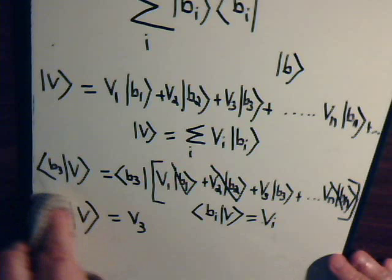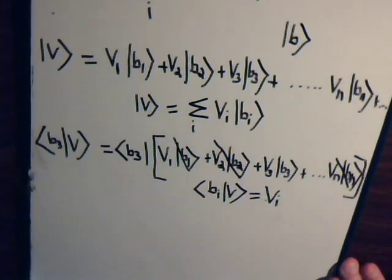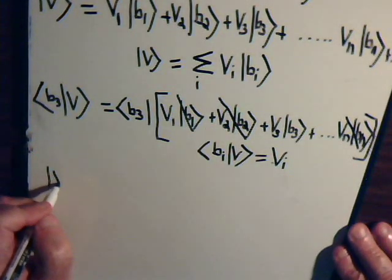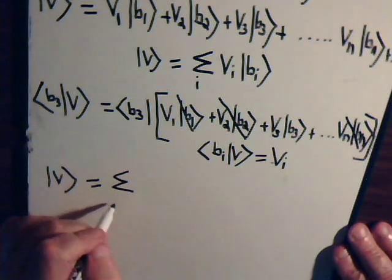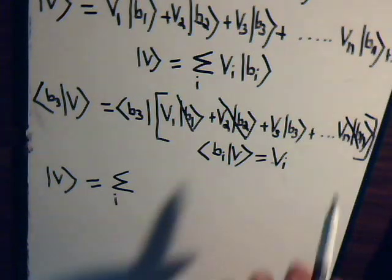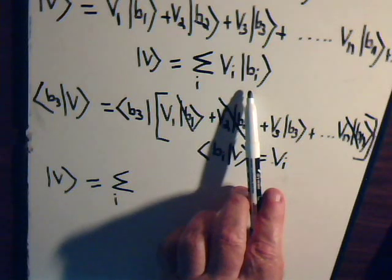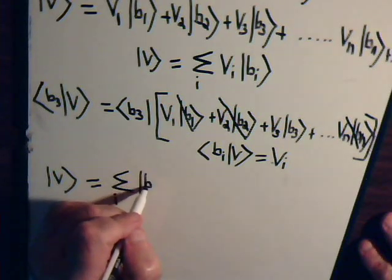Okay, hopefully that makes sense. Then now let's go back. What we have here is this expression. So let's make some room and write this down here. We're saying that v equals the sum over i, and here this is a coefficient, probably a complex number, multiplied by this basis vector.